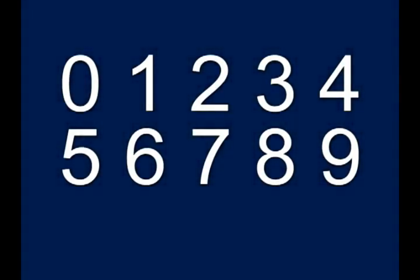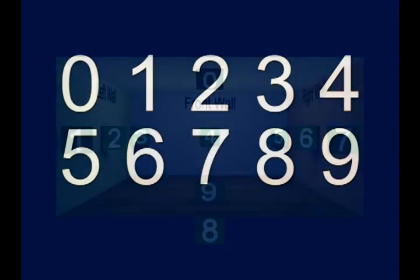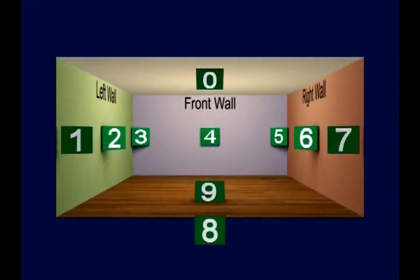There are only ten single-digit numbers in our numbering system, zero through nine. The ten single-digit numbers, zero through nine, will be assigned to the ten basic locations of any square or rectangular room.